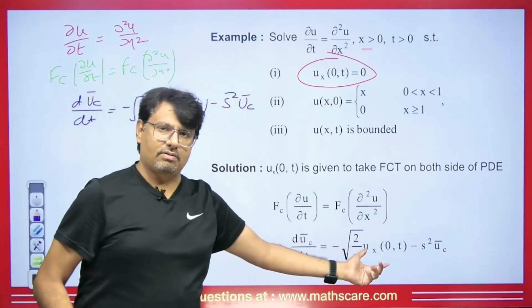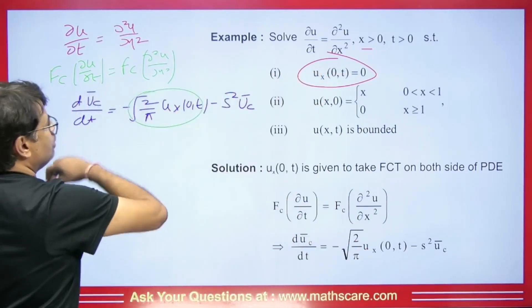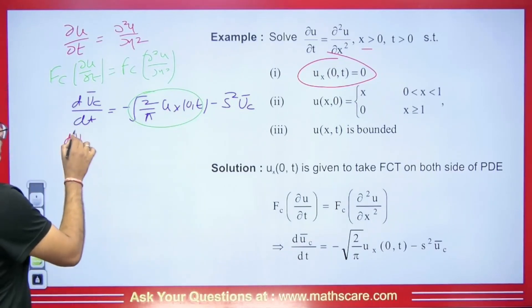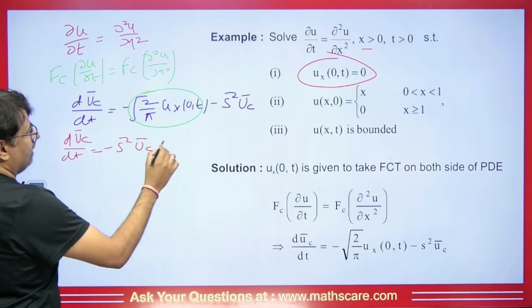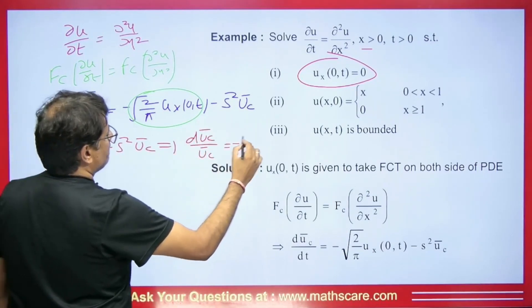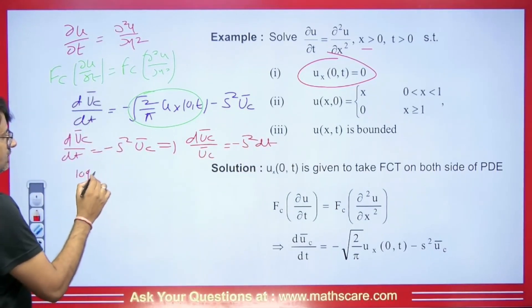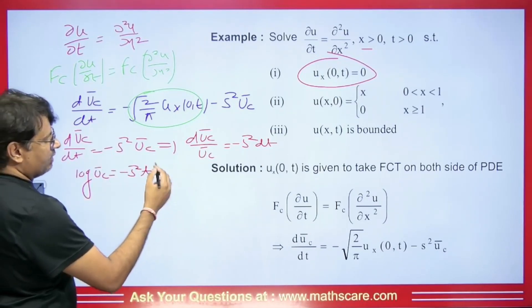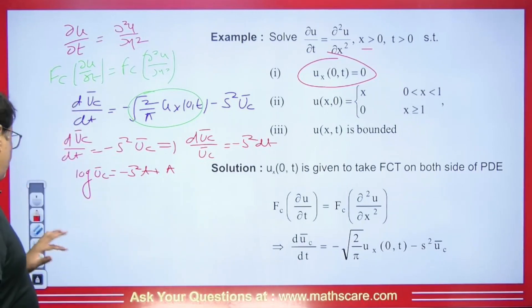With u_x(0,t) equal to 0, we are left with dū_c/dt equals minus s²·ū_c. Separating variables: dū_c/ū_c equals minus s²·dt. Integrating both sides: ln(ū_c) equals minus s²·t plus a constant, taken as ln(A) for convenience. Removing the logarithm gives ū_c equals A·e^(minus s²·t). This is equation (1) and we now need to find the value of A.